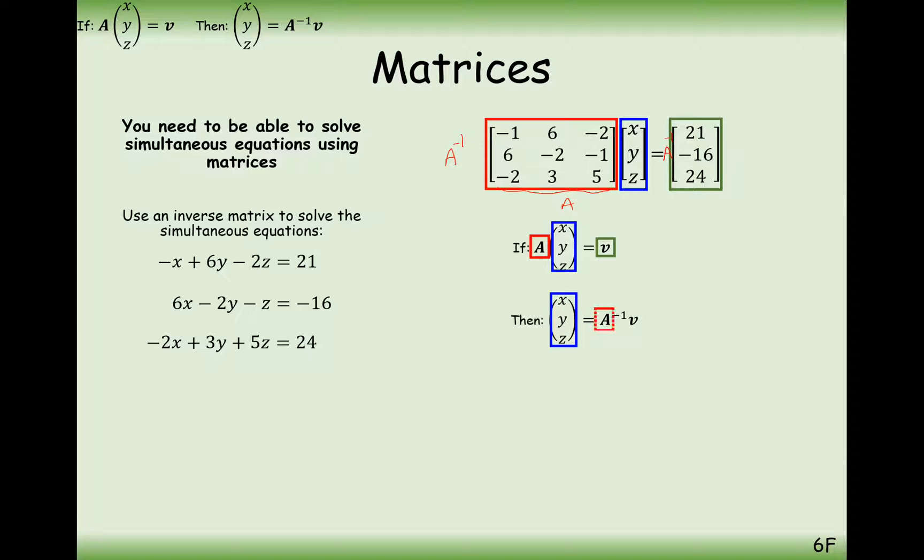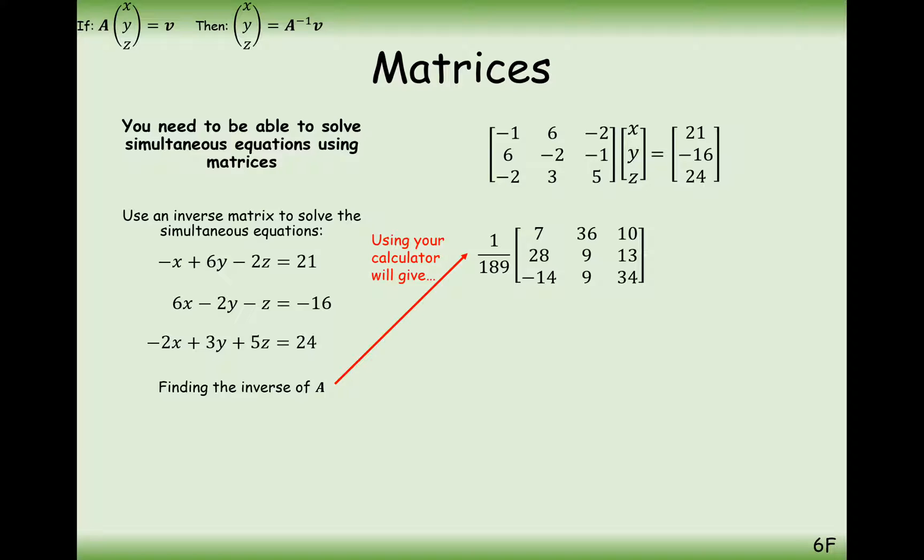What we need first is to find the inverse of this matrix here. Here is where you can use your calculator with great efficiency. Because the inverse of this matrix is within a contextualized problem-solving question, we can use our calculator to find this inverse without going through all of those five steps. So, use your calculator and you'll see that the inverse of this matrix here is 1 over 189, 7, 36, 10, and so on.